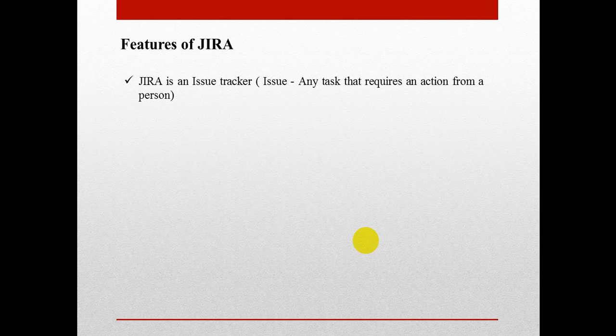Jira is an issue tracker tool. When you are working with Jira, everything will be considered as an issue. When you say defect, a defect is an issue. When you say requirement, a requirement will be considered as an issue. So each and every item in the Jira tool will be considered as an issue. That is why Jira is called an issue tracker tool.